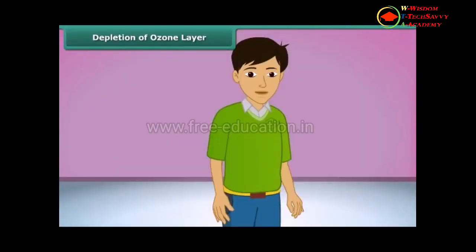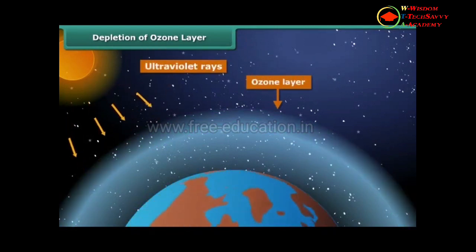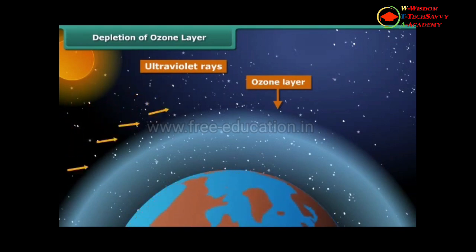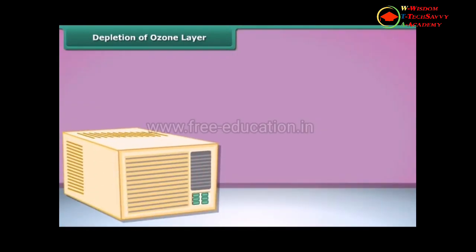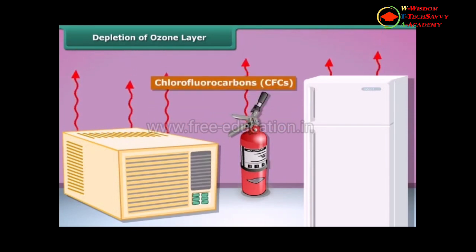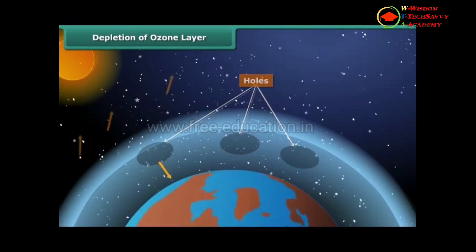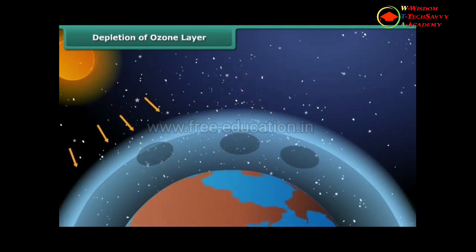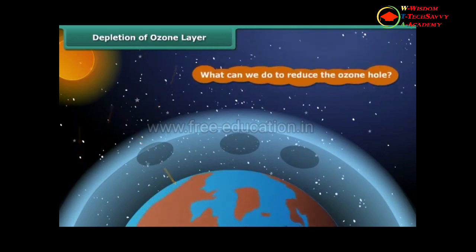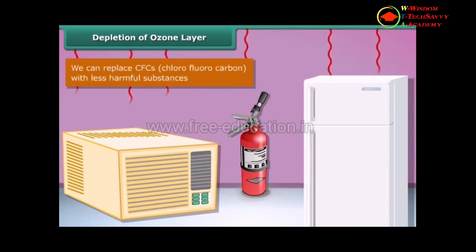Let us learn about the ozone layer. It is a layer of ozone gas in the upper atmosphere of Earth. Its role is to protect us from the harmful ultraviolet rays of the sun. Things like air conditioners, refrigerators, and fire extinguishers release chlorofluorocarbons (CFCs) into the atmosphere and create holes in the ozone layer. CFCs are another type of air pollutant. To reduce the ozone hole, we can replace CFCs with less harmful substances to save the ozone layer from depletion.